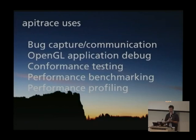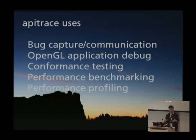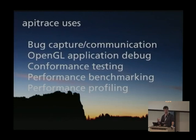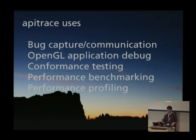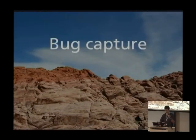There are probably five different reasons why API Trace is interesting: one is to actually capture bugs for bug reporting and bug communication; one is for debugging an application; and then doing conformance testing, benchmarking, and performance profiling. That's really the outline of the rest of my talk — five different use cases.